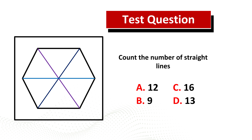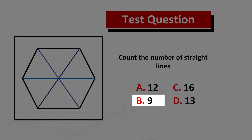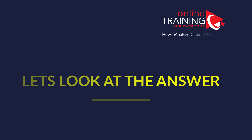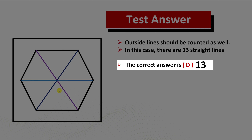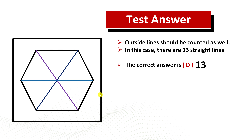Here's an interesting question from the real test which has some catch. Count the number of straight lines. You have four choices: A — 12, B — 9, C — 16, and D — 13. One of the key tricks here is that the outside square also has lines that need to be counted, not just the hexagon inside. Counting all lines: 1, 2, 3, 4, 5, 6, 7, 8, 9, 10, 11, 12, 13. The correct answer is 13, choice D. Hopefully you've nailed this question and now know how to answer similar questions in the test.